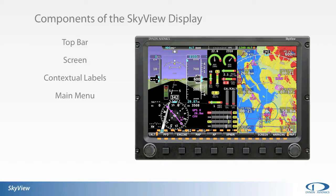From the main menu, the pilot can access adjustment and operation of the primary flight display, engine EMS page, map and flight planning, screen layout, alerting system, along with autopilot and transponder controls if installed. Upon power-up, the SkyView display will present the main menu.